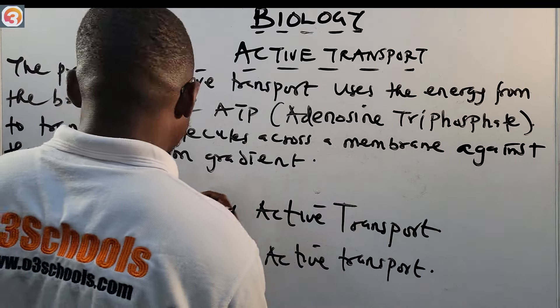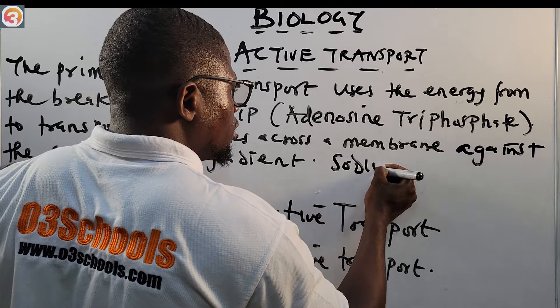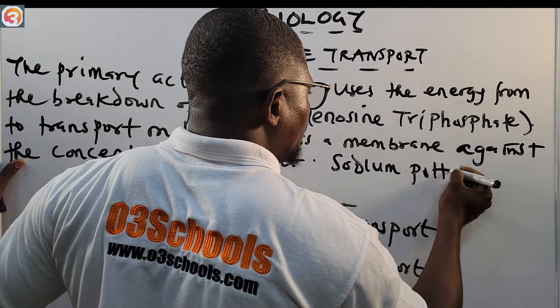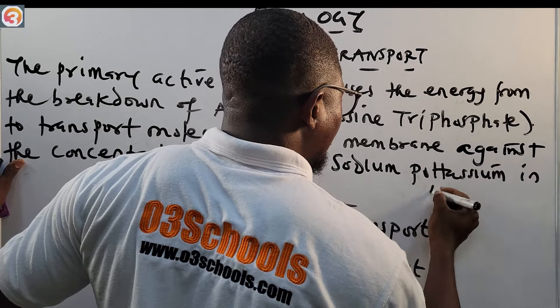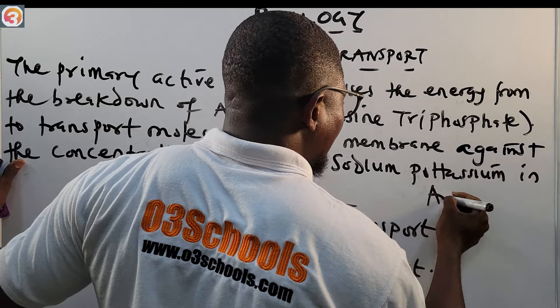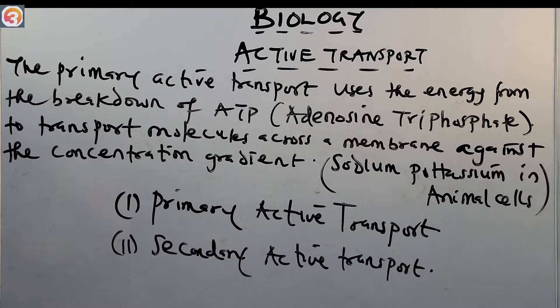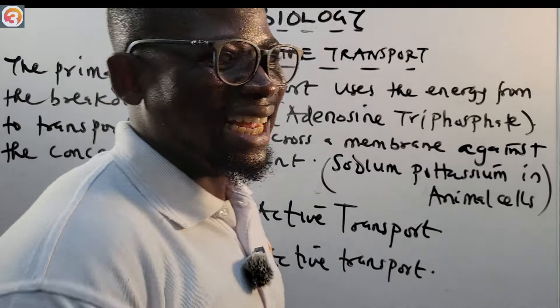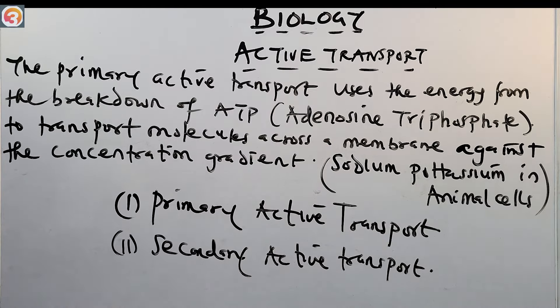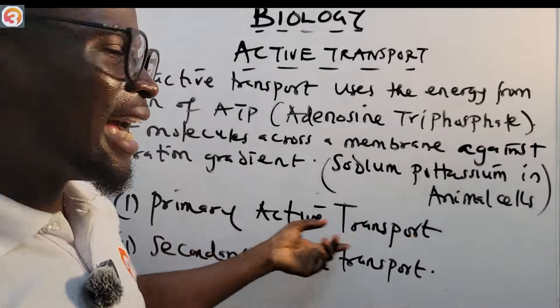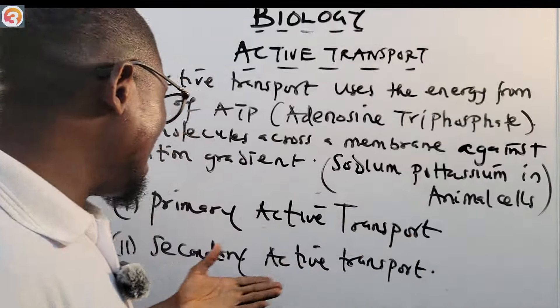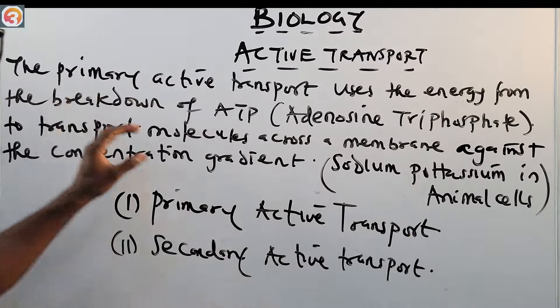An example of primary active transport is the sodium-potassium pump in animal cells. That is an example of primary active transport.